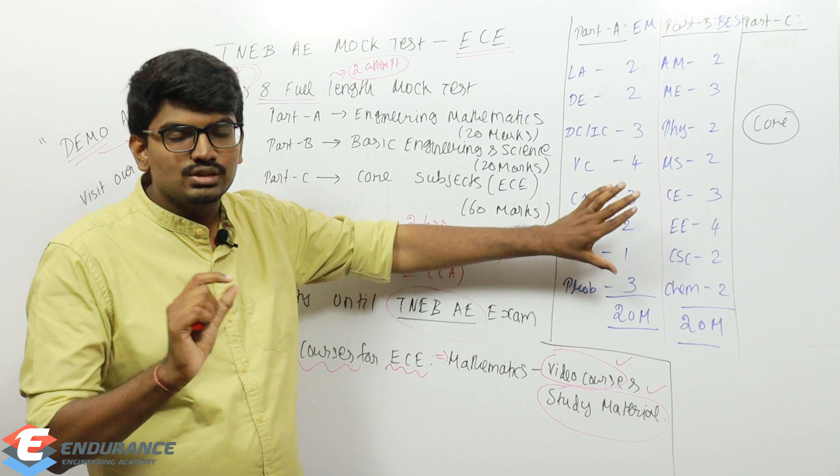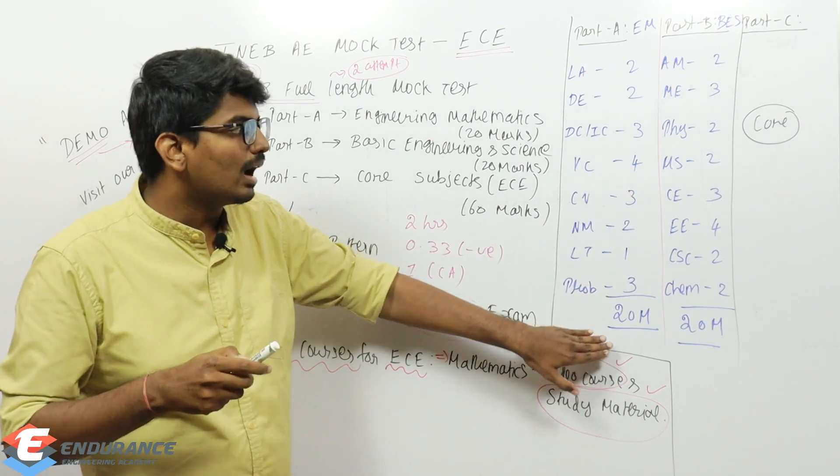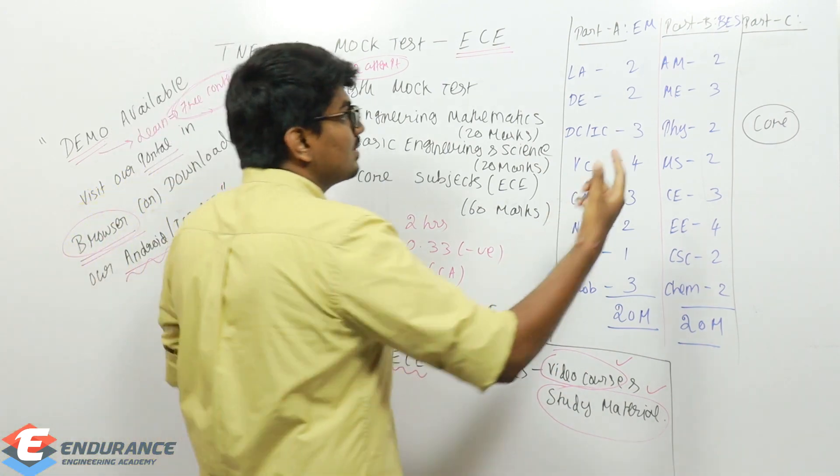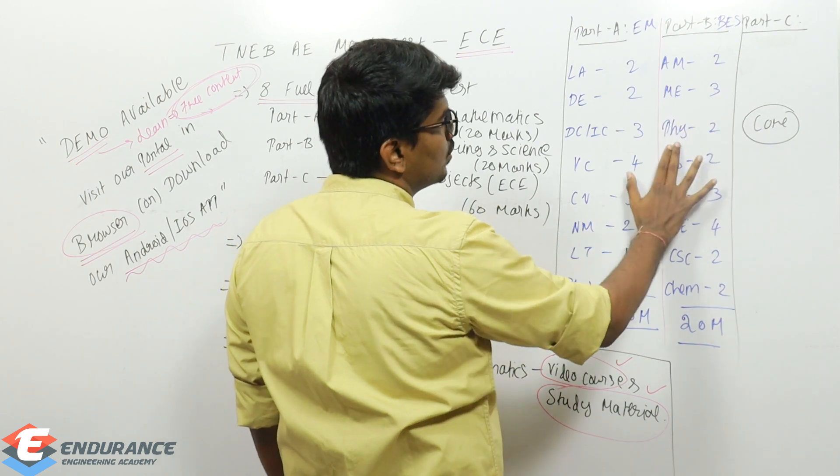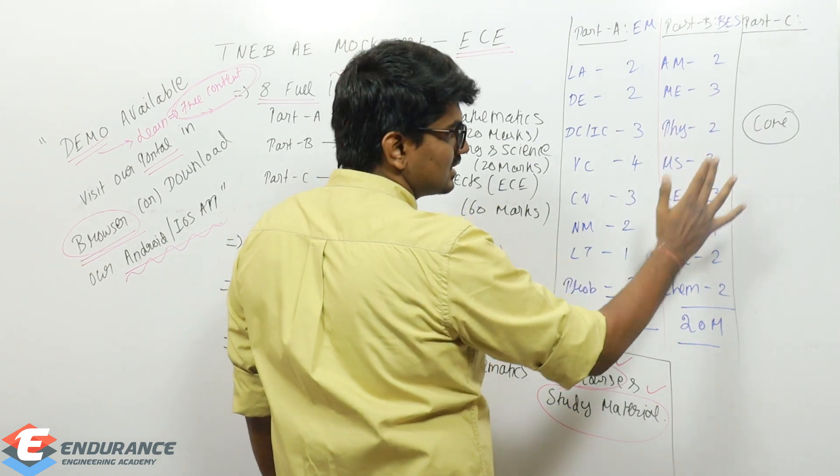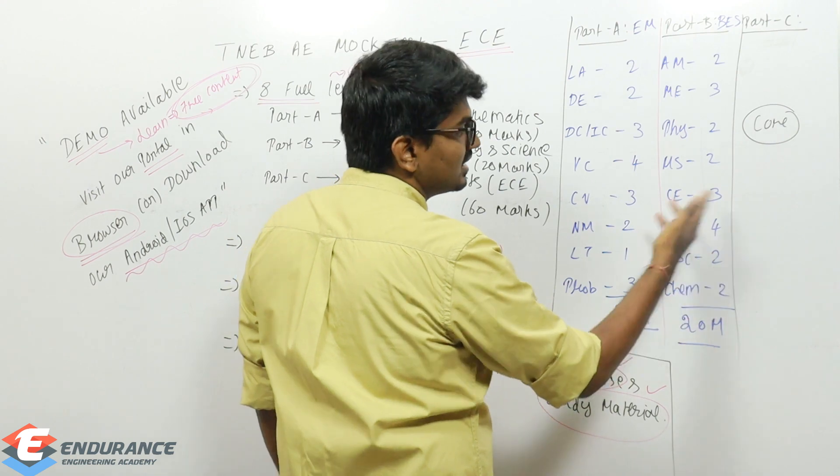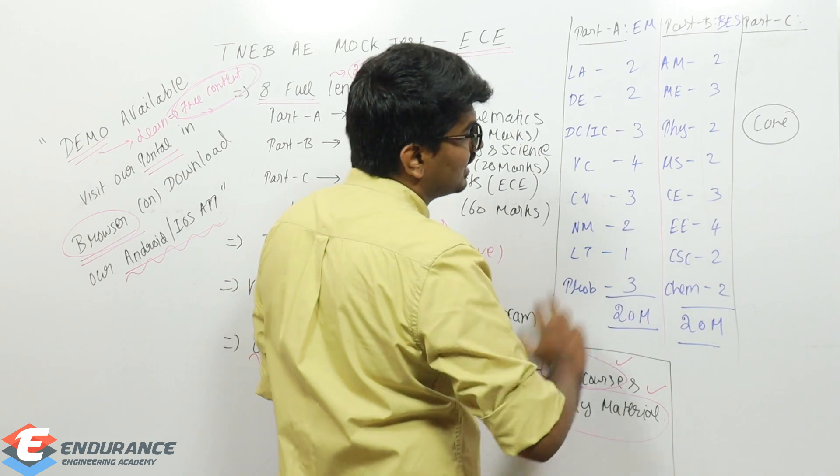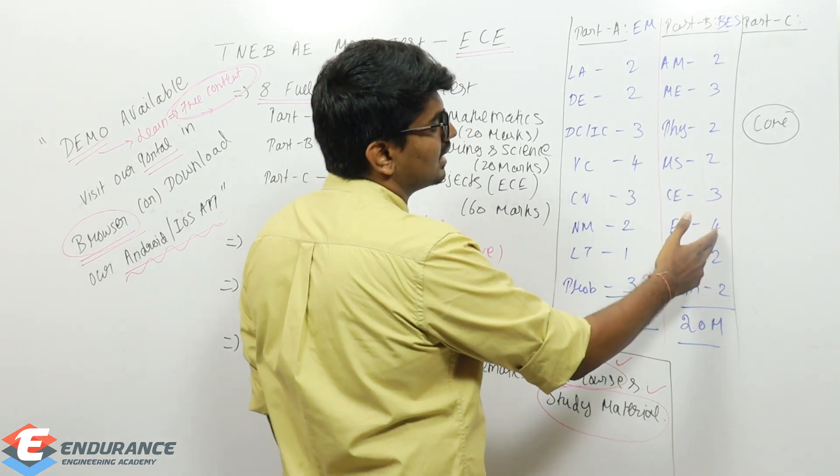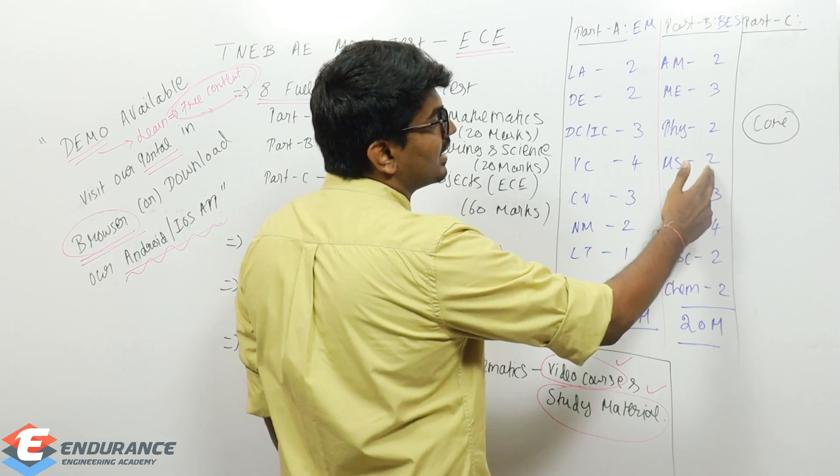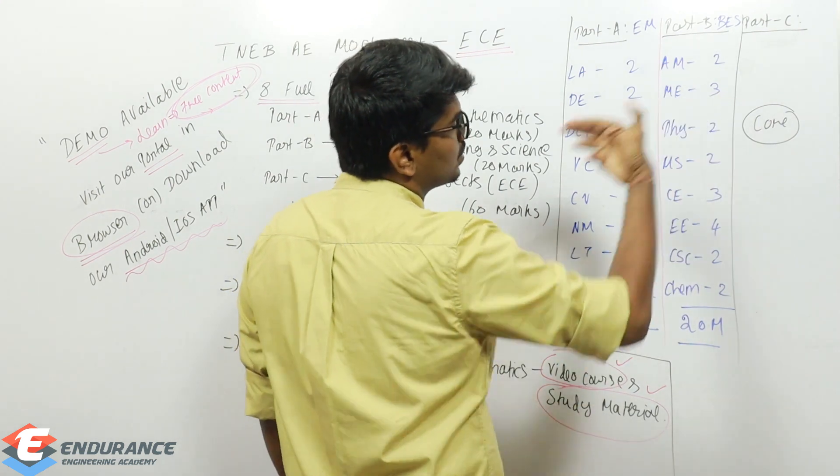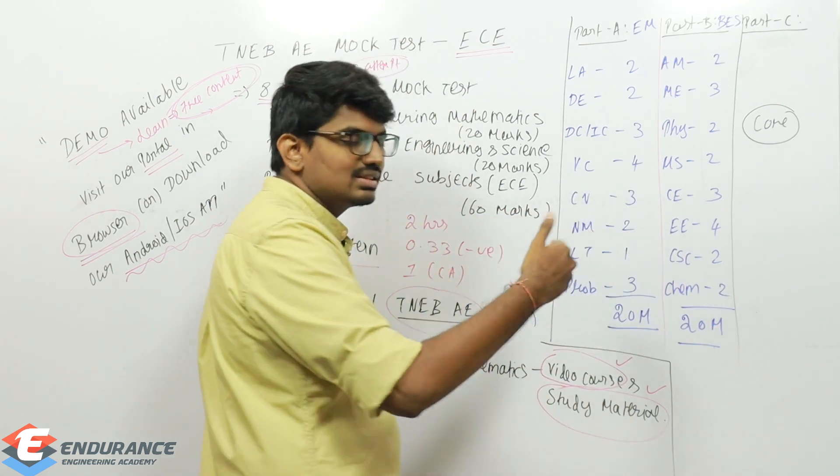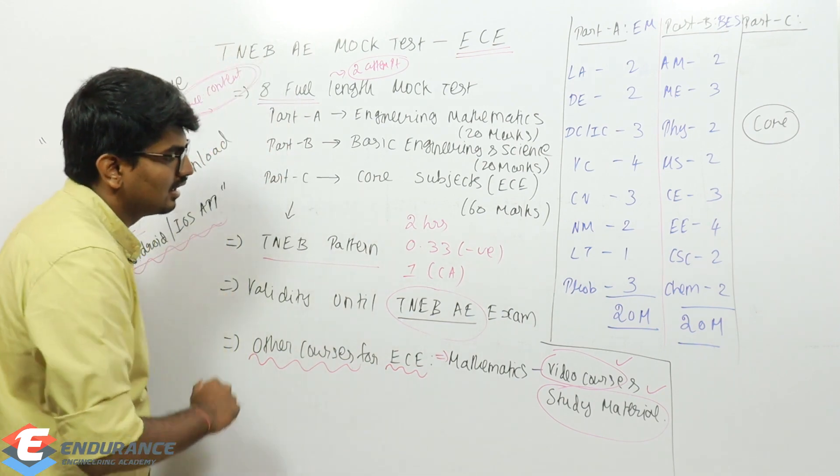Sometimes probability may have four and vector may have three, or differential may have three - small variations of one or two marks may occur. Part B: applied mechanics has two questions, basic mechanical engineering has three, physics has two, material science has two, civil engineering has two, basic electrical engineering has two or three, computer science has two, and chemistry has two.